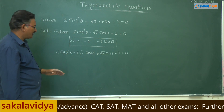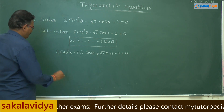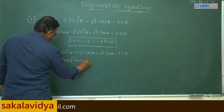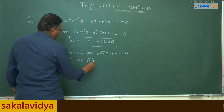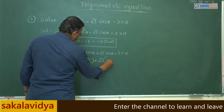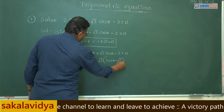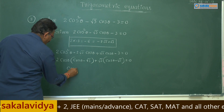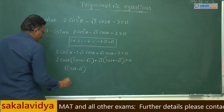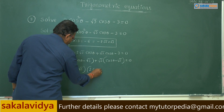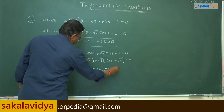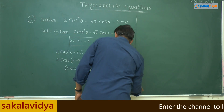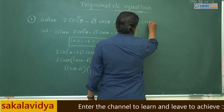From the first two terms, we take 2cosθ as the common factor, giving (cosθ - √3). From the last two terms, we take √3 as the common factor, also giving (cosθ - √3). So we have (2cosθ + √3)(cosθ - √3) = 0, yielding two cases: cosθ - √3 = 0 and 2cosθ + √3 = 0.